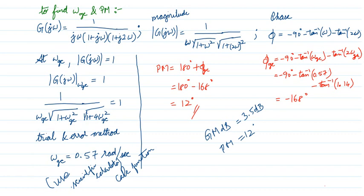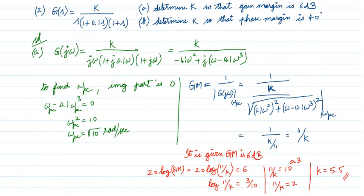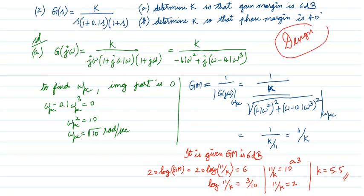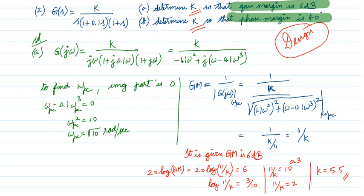Let's move to the next problem — a design problem. A transfer function is given and we are asked to find the value of k such that the gain margin is 6 dB, and separately, such that the phase margin is 40 degrees. It is a design problem because the stability conditions are given and we must find k. This can also be solved mathematically.